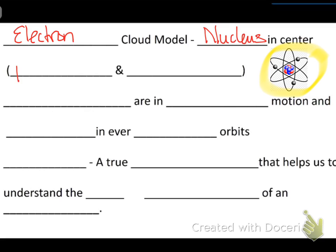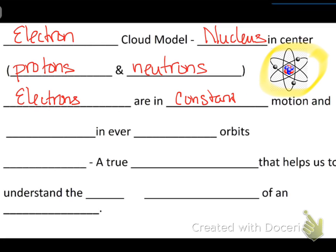The nucleus is in the center and it contains the protons and neutrons. The electrons are in constant motion and travel in ever-changing orbits. So, all of this can be applied to the Bohr's model and we just don't see the electrons in constant motion. We just know that they do move.